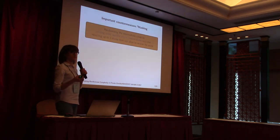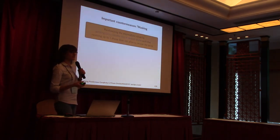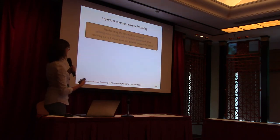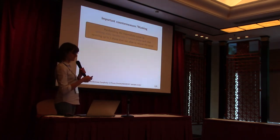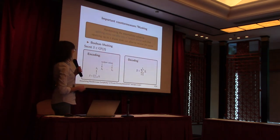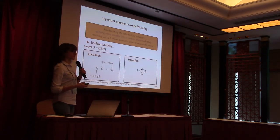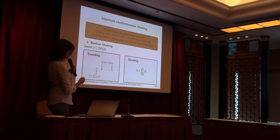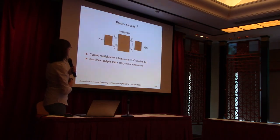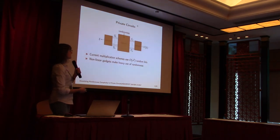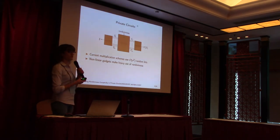An important countermeasure against such an attack is masking, which consists in randomizing the secret by splitting it into n random shares. During this talk I will just talk about boolean masking, where the encoding and decoding are represented in this box. So private circuits will have an encoder and a decoder at the end of the execution, which will split and recompose the secret.